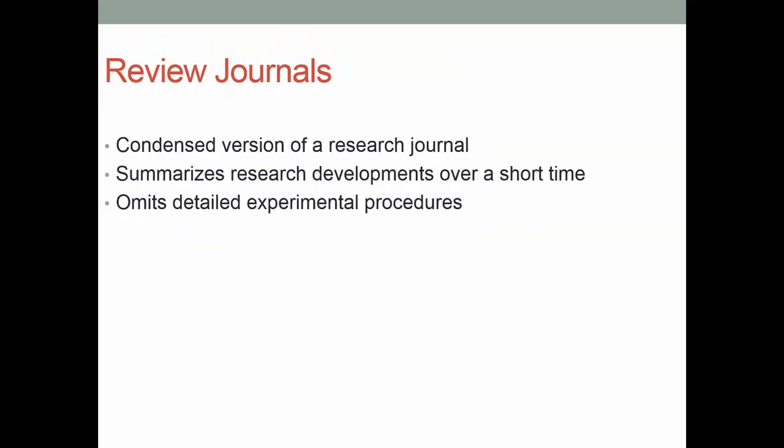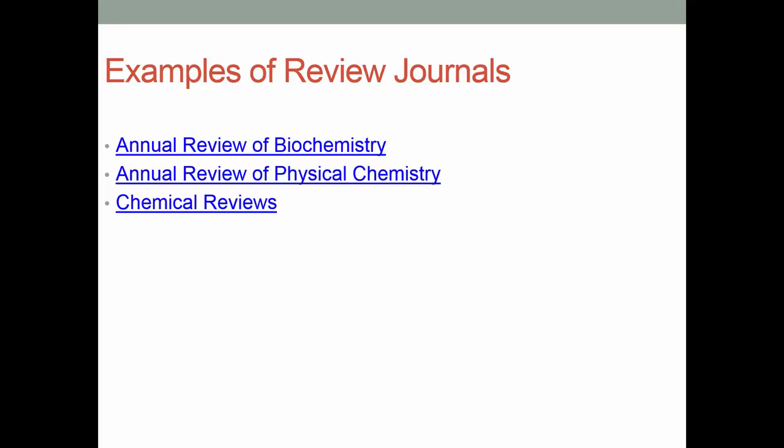Review journals: as you saw in the article in the Journal of Membrane Science, research articles are very detailed. A review journal is a condensed version of the research journal, omitting the very detailed experimental procedures, and it summarizes research. Examples include Annual Review of Biochemistry, Annual Review of Physical Chemistry, and Chemical Reviews. If you read an article in one of these journals and are interested, it'll give you a reference to the original research where you can read about the detailed experimental procedures.